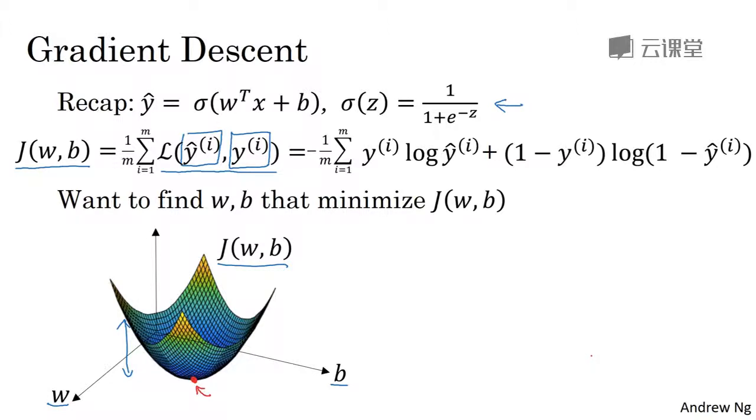It turns out that this particular cost function j is a convex function. So it's just a single big bowl. So this is a convex function and this is as opposed to functions that look like this, which are non-convex and has lots of different local optima. So the fact that our cost function j of w, b as defined here is convex, is one of the huge reasons why we use this particular cost function j for logistic regression.